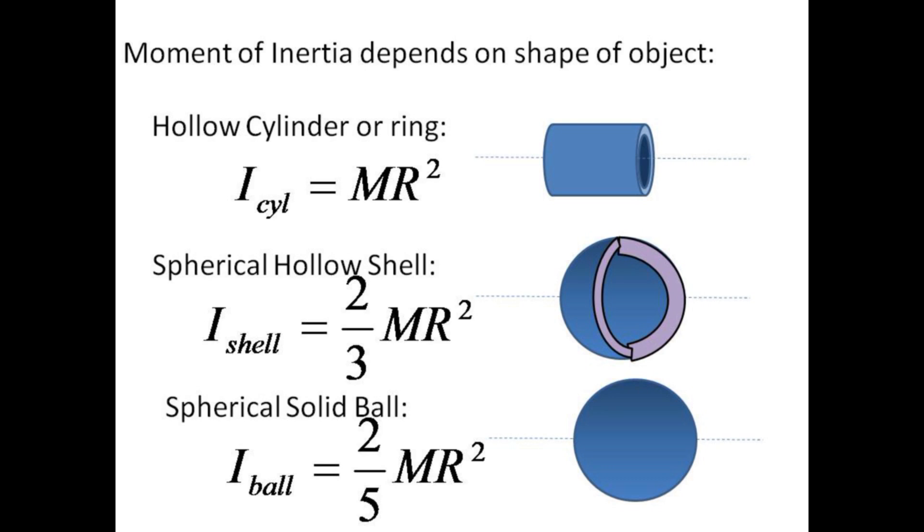Different objects will have different moments of inertia. The three objects we will look at are the hollow cylinder, a segment of PVC tubing, the spherical hollow shell, a racquetball, and the spherical solid ball, a bocce ball.